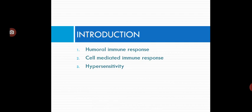This hypersensitivity reaction classification by Coombs and Gell classified hypersensitivity into four main types: Type 1 hypersensitivity reaction, Type 2 hypersensitivity reaction, Type 3 hypersensitivity reaction, and Type 4 hypersensitivity reaction.